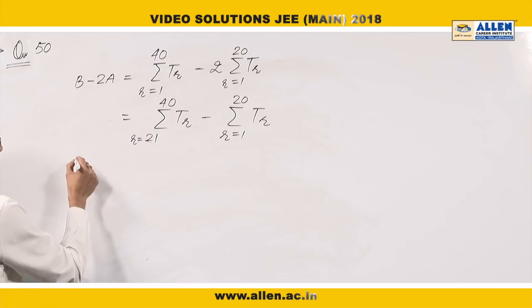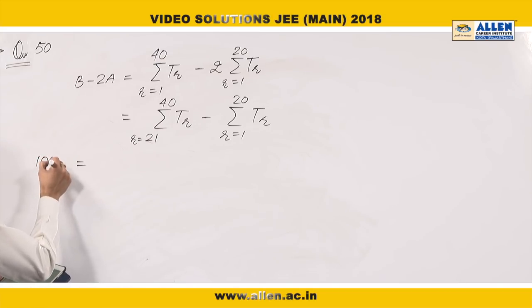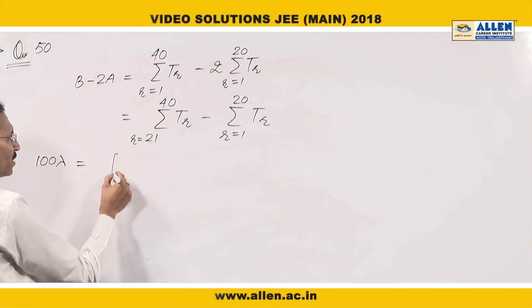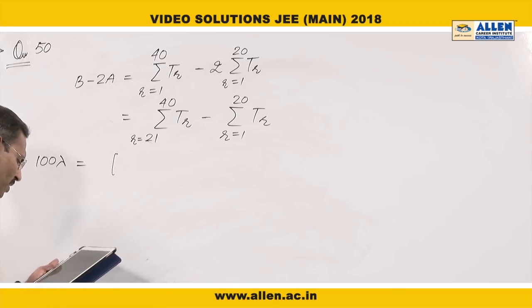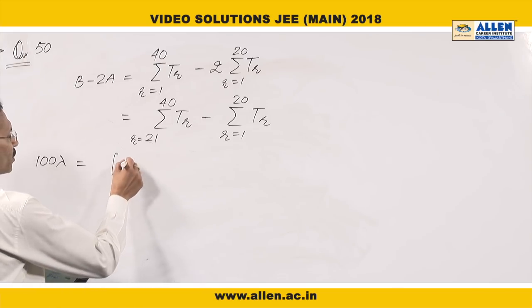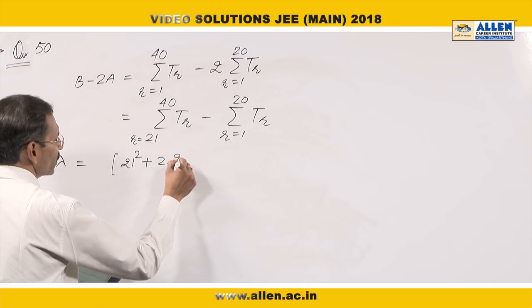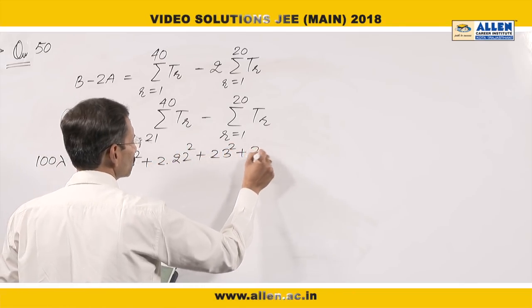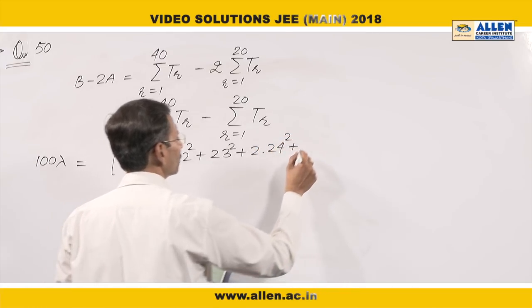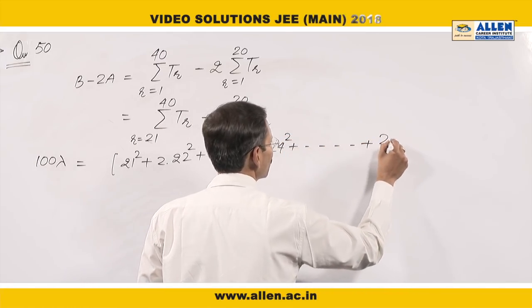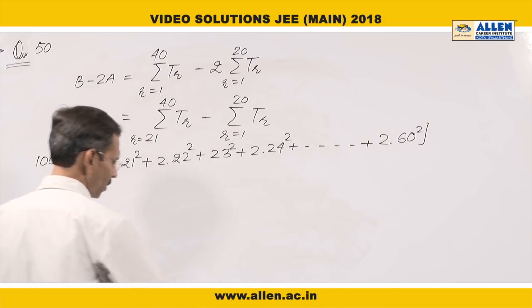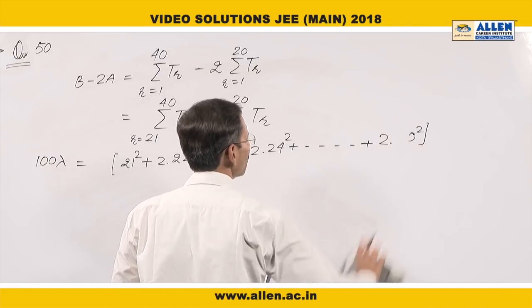Now I will write it as, it is given as 100 lambda. The 100 lambda is equal to, I am writing first 20, these 20 terms. The terms will start from 21 square. 21 square, then plus 2 times 22 square, 23 square, 2 times 24 square, and so on, up to 2 into 40 square. 40 terms are there, that's why it is 40 square.